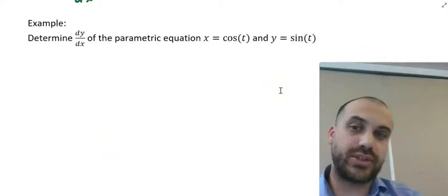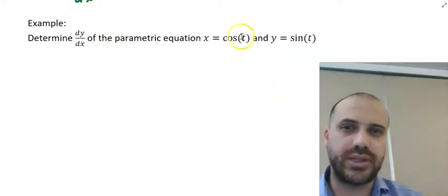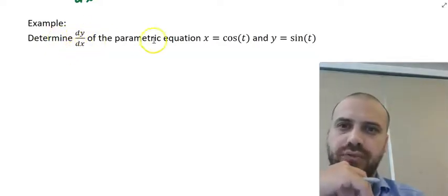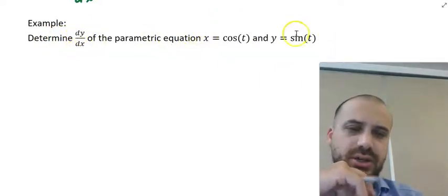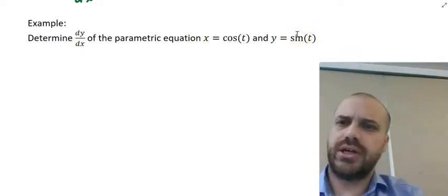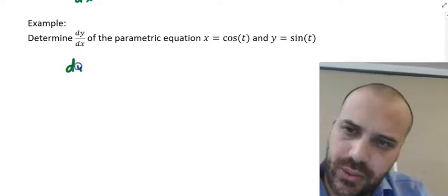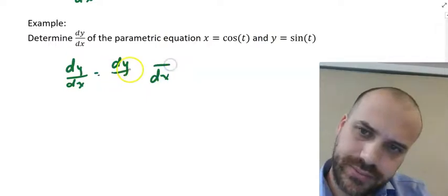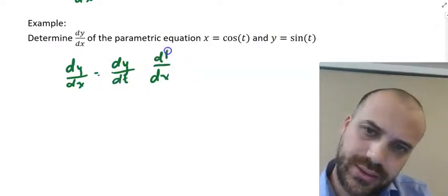So given I've just been talking about that circle, let's do an example using that circle. Determine the rate of change of y with respect to x of the parametric equation, which you know is a circle, x squared plus y squared equals 1. So we know that dy/dx equals dy/dt times dt/dx.